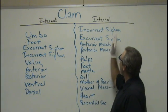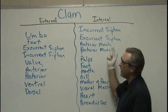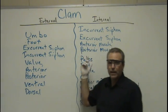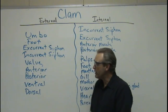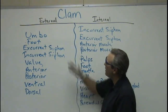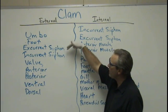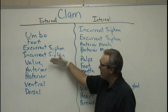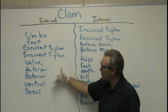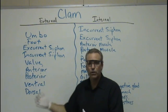We're going to divide it up by external and internal. These are all the external things that we need to look at: umbo, foot, incurrent siphon, excurrent siphon, valve, anterior, posterior, ventral, and dorsal. You should know those.